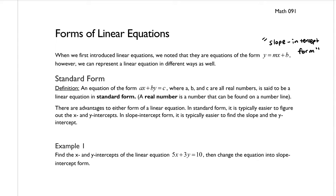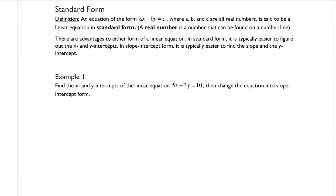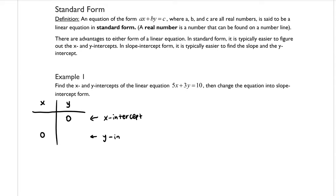Example 1 wants us to find the x and y intercepts of the linear equation 5x plus 3y equals 10, then change the equation into slope-intercept form. I'm going to make an x-y table. Remember, the x-intercept is the ordered pair where the y-coordinate is equal to 0, and the y-intercept is the ordered pair where the x-coordinate is equal to 0. We're going to plug in 0 for either x or y.